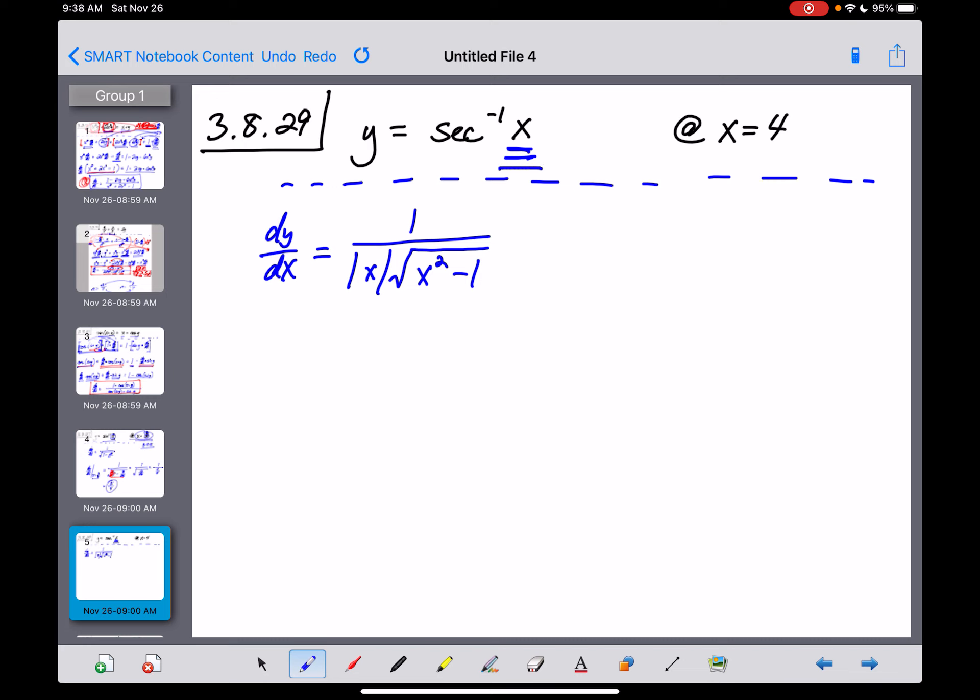Now that derivative cannot be simplified any further than it is. That's why we wrote it that way in our notes, so now we just have to evaluate it when x is 4 and then simplify that answer as best we can. So our derivative, evaluated at x equals 4, let's see what that looks like.